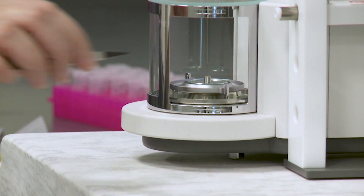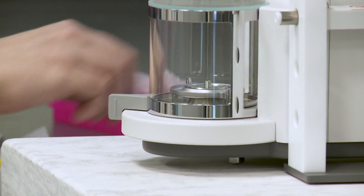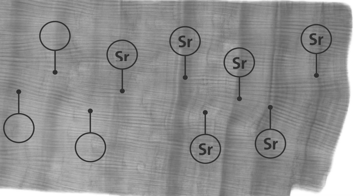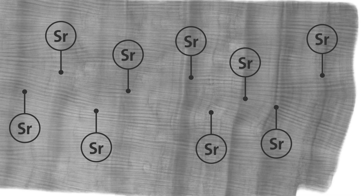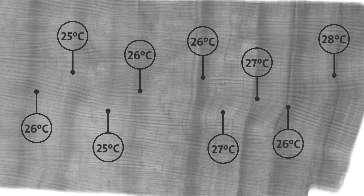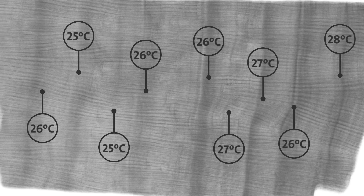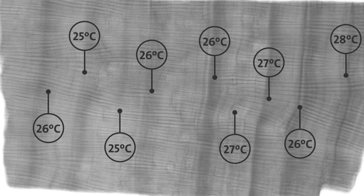Strontium is one element we're very interested in. If it gets colder, the corals incorporate more strontium into their skeleton, and when it gets warmer, they incorporate less strontium. With records of sea surface temperature from the last 20 years, we're able to calibrate each coral to have a thermometer back in time.